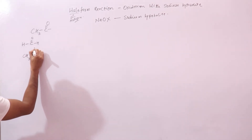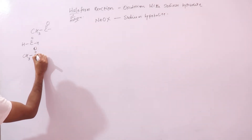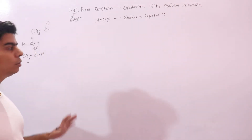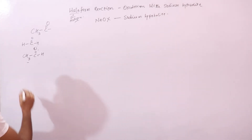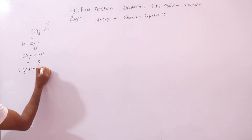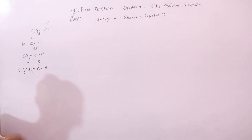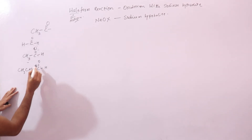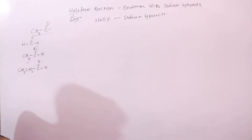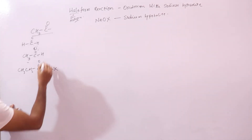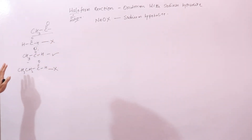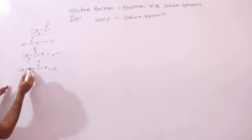Acetaldehyde contains the CH3CO group, so it will respond to the haloform reaction and give a positive result. On the other hand, CH3CH2CHO does not contain the CH3CO group — it contains CH3CH2CO — so it will not give the haloform reaction. Only acetaldehyde gives this reaction among simple aldehydes.